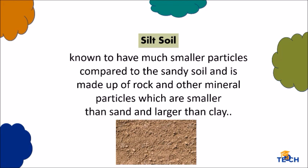Your next type is silt. Silt is known to have much smaller particles compared to the sandy soil and is made up of rock and other mineral particles which are smaller than sand and larger than clay. It is the smooth and quite fine quality of the soil that holds water better than sand. Silt is easily transported by moving currents and is mainly found near the river, lake, and other bodies of water.